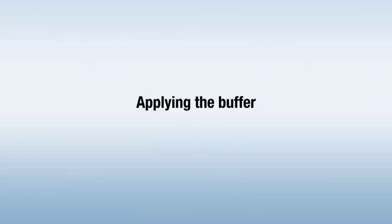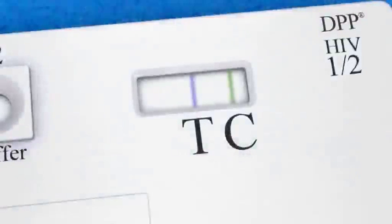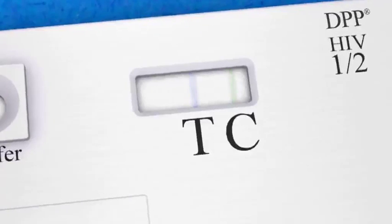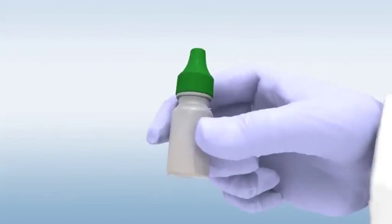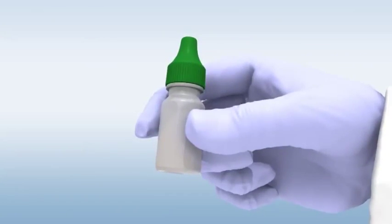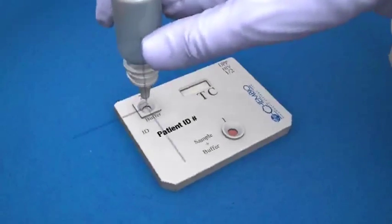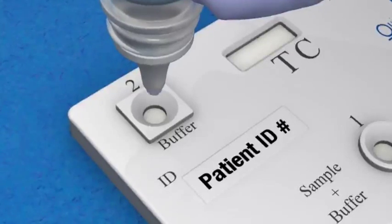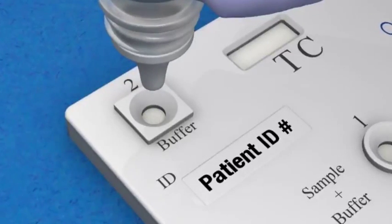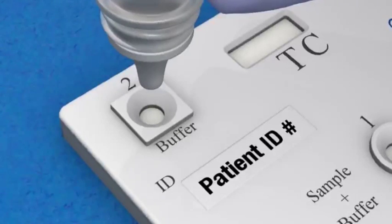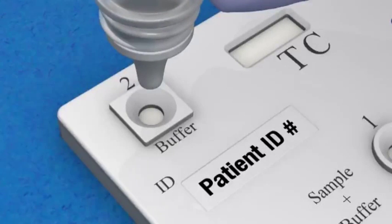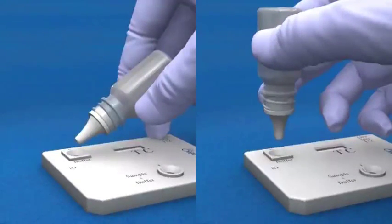Applying the buffer: Ensure that the colored lines have disappeared from the test window before you apply the buffer. Then remove the green cap of the running buffer bottle. Hold it in a vertical position but upside down, and gently apply four drops of buffer into the square buffer well, again without touching the bottom of the well with the tip. Be aware that holding the bottle sideways will produce invalid results.